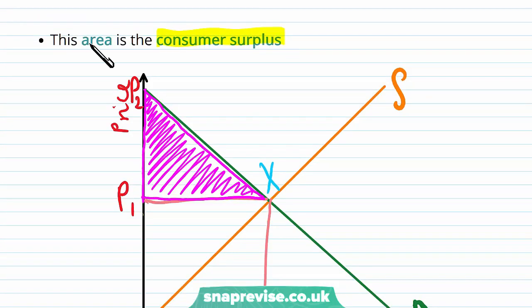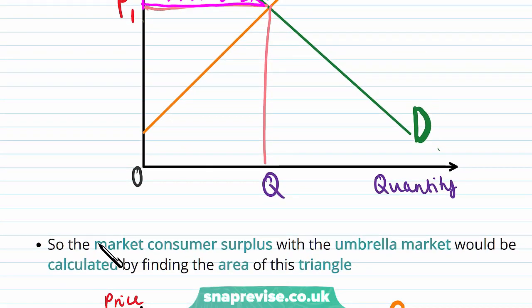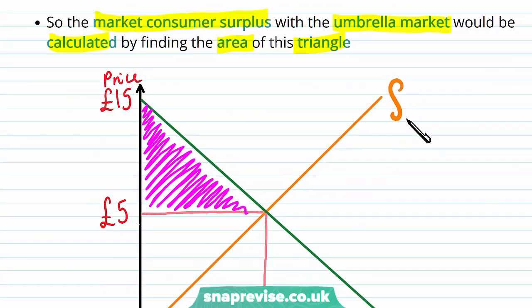As we've just said this is our consumer surplus, this triangle right here. And so the market consumer surplus with the umbrella market would be calculated by finding the area of this triangle right here.